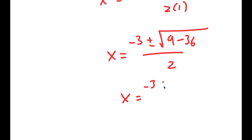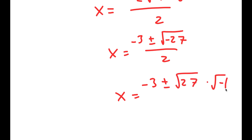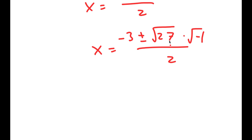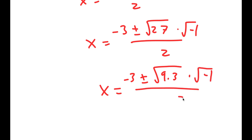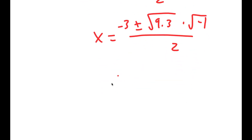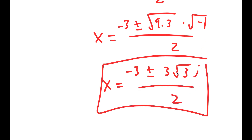And this turns into negative 3 plus or minus the square root of 9 minus 36 over 2, which is equal to negative 3 plus or minus the square root of negative 27 over 2. Now 27 is the same thing as 9 times 3, and the square root of 9 is 3, so I get x is equal to negative 3 plus or minus 3 root 3 times i, since the square root of negative 1 is equal to i. So these are two more solutions to this equation.